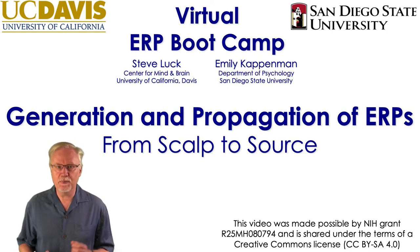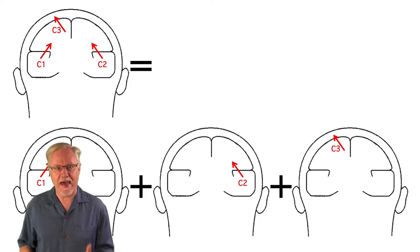In this video, I'm going to discuss how multiple ERP generator sources combine together in our scalp electrodes. The key underlying concept is that when you have multiple voltages passing through a conductor at the same time, they simply sum together.